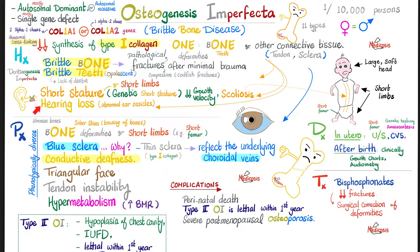How can I diagnose osteogenesis imperfecta? History and physical exam. Before birth, use ultrasound to look for short femur and short extremities. Then genetic testing in utero can be done by obtaining a sample from the amniotic fluid — amniocentesis — or from the chorionic villi — chorionic villus sampling — to look for the defective genes.